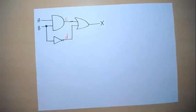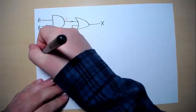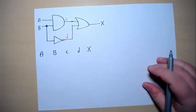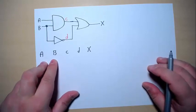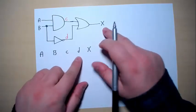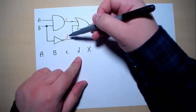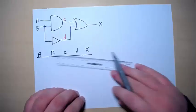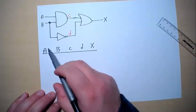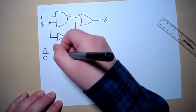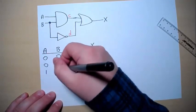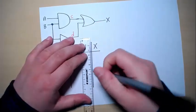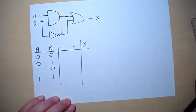So now we can draw the truth table for this logic circuit. So we have A, B, C, D, and X. These two are the inputs. X is the final output. C and D are what I am calling the intermediate outputs which are the output of the internal logic gates. As usual we have to write down the inputs. Since we have two inputs A and B, I'm going to draw 0 0, 0 1, 1 0, 1 1, and you can now start to fill in this truth table.